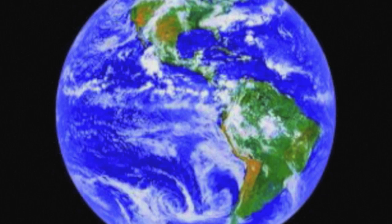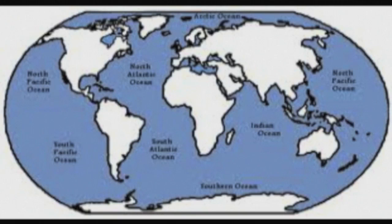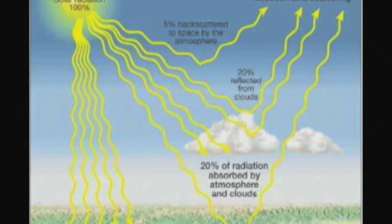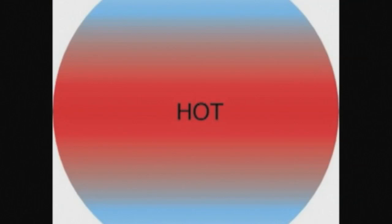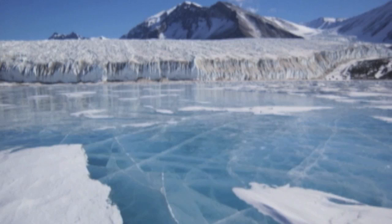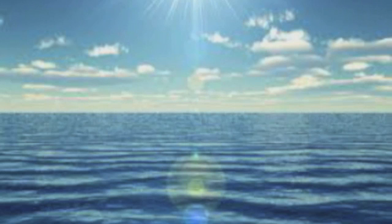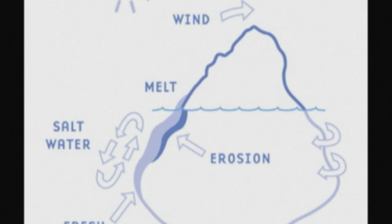70% of Earth is covered in water by the Atlantic, Pacific, Arctic, and other southern oceans. The ocean absorbs, stores, and releases large quantities of heat. Water changes temperature slowly — for example, when summer comes along, the water is still cold at the beginning of summer but begins to warm up by the end. When autumn comes along, the water is most likely to still be warm.